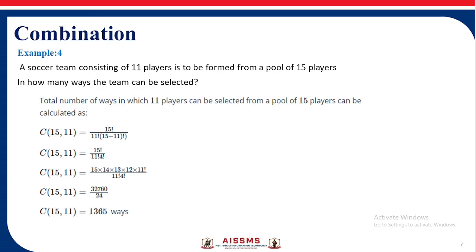So 15C11 gives us the result as 15 factorial upon 11 factorial into 15 minus 11 factorial which gives us the answer as 1365 ways.